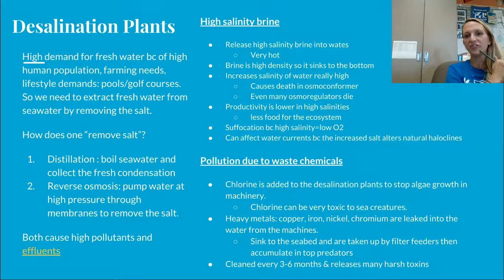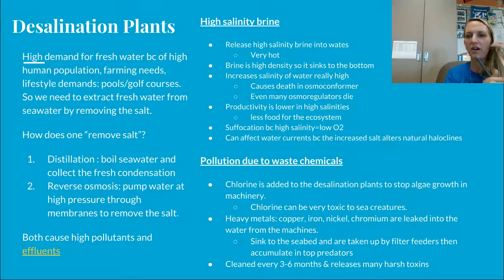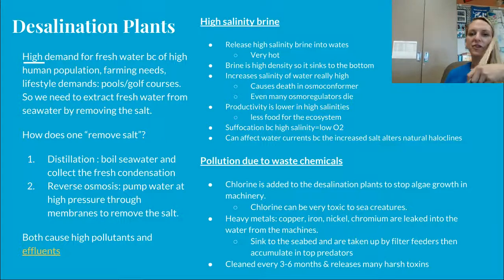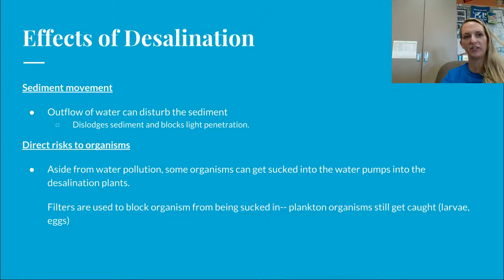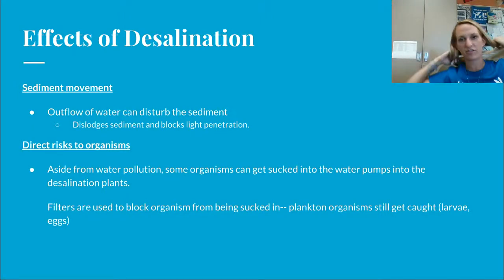Pollution due to chemical waste: chlorine is added to desalination plants to stop algae growth in the machinery, but it is toxic to sea creatures. Heavy metals like copper, iron, nickel, and chromium leak into water from the machines, sink to the seabed, and are taken in by filter feeders, accumulating near top predators. These machines are cleaned every three to six months, releasing many harsh toxins. The outflow of water from the plant can dislodge sediment, cause turbidity, and decrease light penetration.